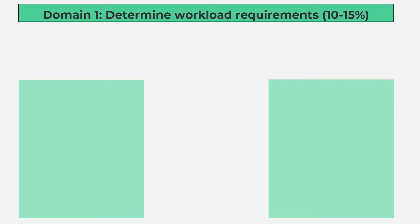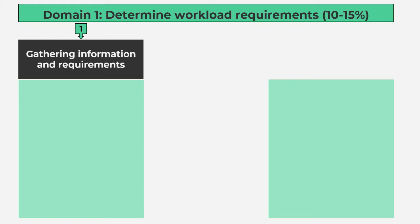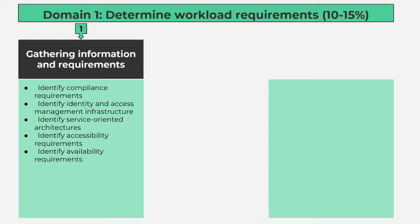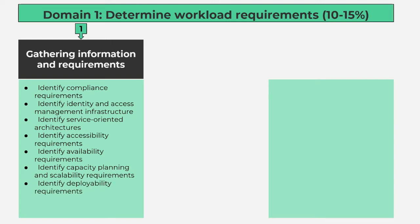Domain 1: Determine Workload Requirements, 10-15%. Number 1, Gathering Information and Requirements contains 9 subtopics: identify compliance requirements; identify identity and access management infrastructure; identify service-oriented architectures; identify accessibility requirements; identify availability requirements; identify capacity planning and scalability requirements; identify deployability requirements; identify configurability; identify governance requirements.